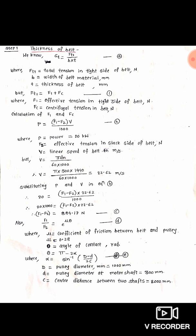Since equation C has two unknowns we need one more relation. For belts we have: f1 ÷ f2 = e raised to mu×theta — equation D. Here mu is the coefficient of friction between belt and pulley, which is 0.28. Theta is called the angle of contact or angle of lap, and it must be substituted in radians.